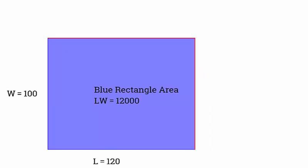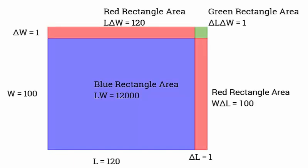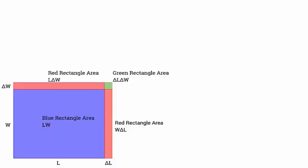A 100 by 120 rectangle has an area of 12,000 square units. And if we increase both sides by 1, the area becomes 12,221 square units, an increase of 221.